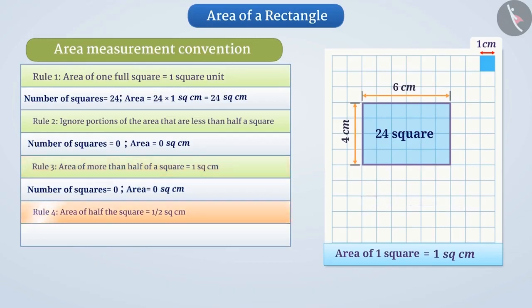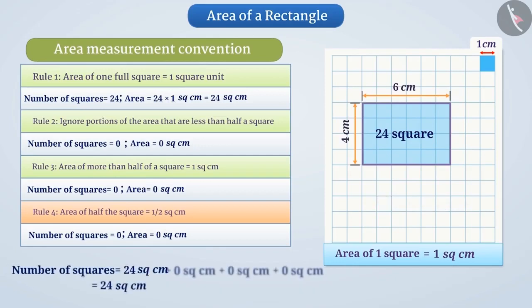Rule 4: If exactly half the square is counted, take its area as half square cm². We don't have half squares here. In this way, the total area of the rectangle is 24 cm².